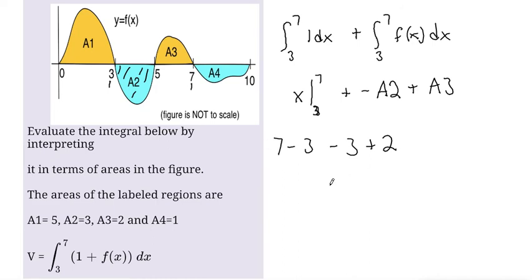And we just need to simplify from here. So 7 minus 3 is 4, 4 minus 3 is 1, and 1 plus 2 is 3. So the final answer would be 3.